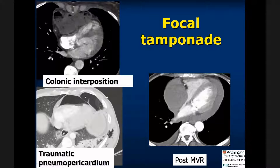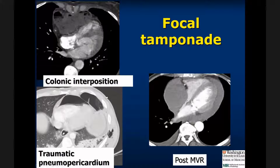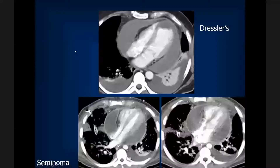Focal forms of tamponade. It can be air, as in this case where a pneumopericardium is flattening the right ventricular free wall; the patient also had a pneumothorax. After mitral valve replacement, fluid accumulated several days later with adhesions and a focal area of blood compressing the right-sided chambers and the posterior wall of the left atrium. This patient had colonic interposition that became obstructed and compressed the right ventricle and right atrium, causing focal tamponade physiology.